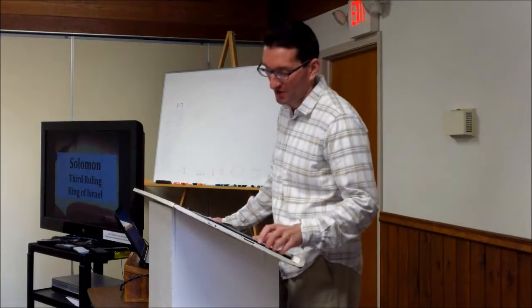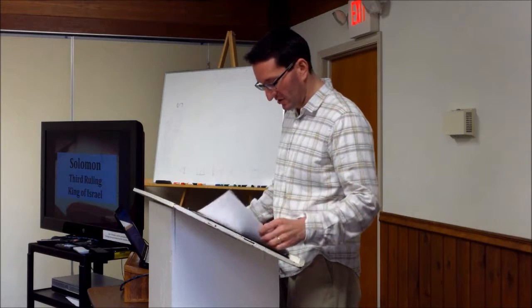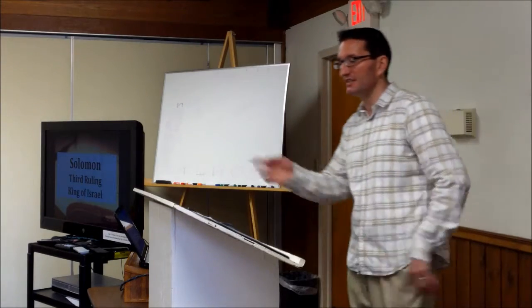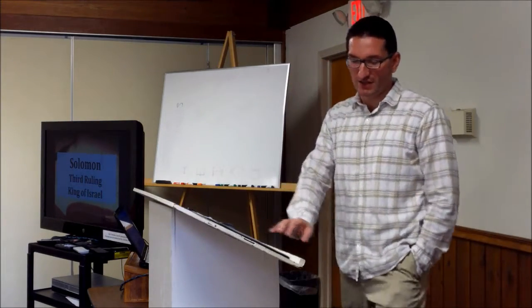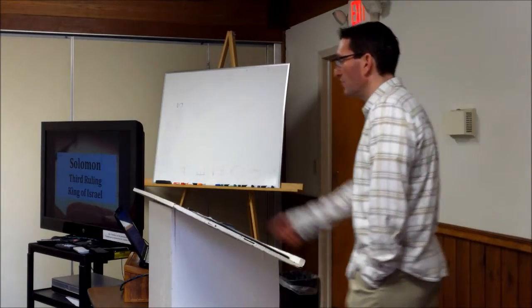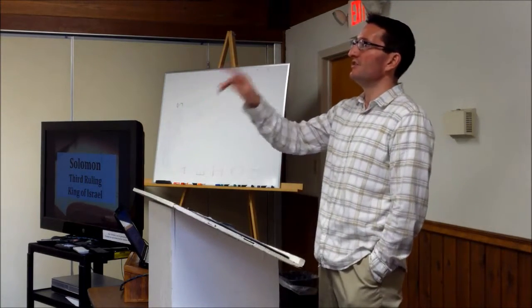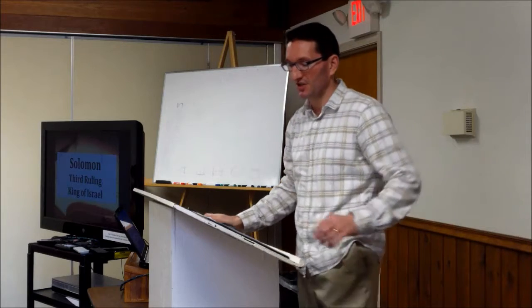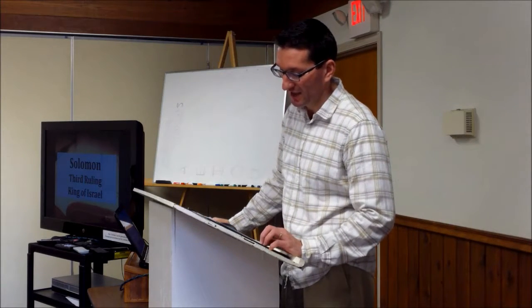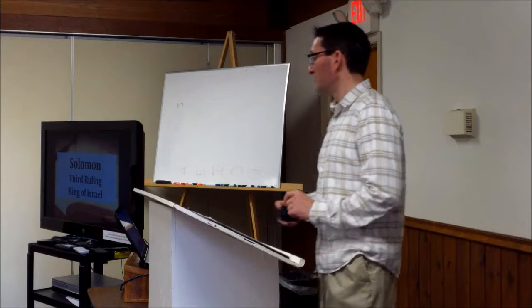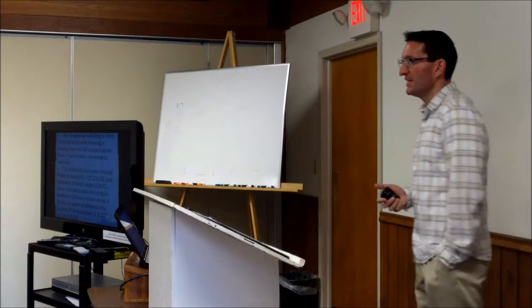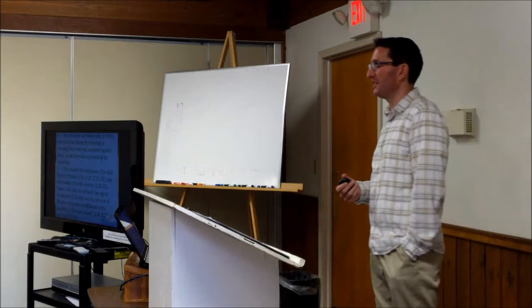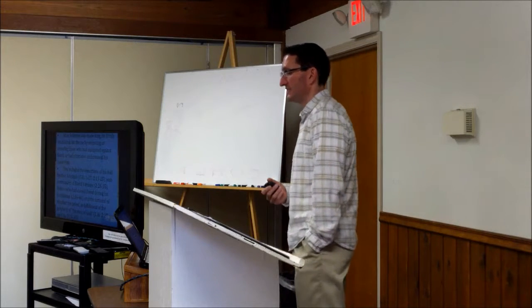David's life ends with his giving instructions to his son Solomon to take care of all of these problem people, these messes that were left for Solomon. So you have to feel for Solomon here, the situation he has. One of David's first words in his final instructions was 'Show yourself to be a man,' which means you're going to have to step up to be the king.